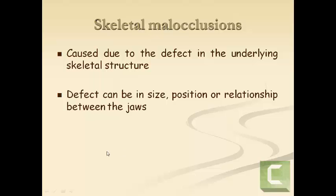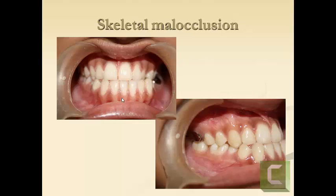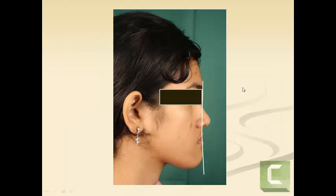Skeletal malocclusions are caused by a defect in the underlying skeletal structure — that is, the jaws. The defect can be in the size of the jaw (either big or small), the position of the jaw (either forwardly or backwardly placed), or the relationship between the jaws. For example, in this case the patient has a class 3 malocclusion where the upper first molar is way behind the lower first molar, and the patient does not have a straight profile — she has a concave profile.